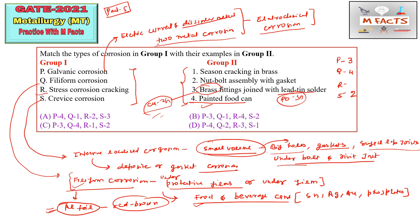Stress corrosion cracking, or SCC, happens when tensile stress and a corrosion environment are both present. The best example is season cracking in brass (Cu-Zn), which is a result of tensile stresses combined with a corrosion medium. So R matches with 1. The code is now P→3, Q→4, R→1, S→2. Eliminating options, C is the correct answer.